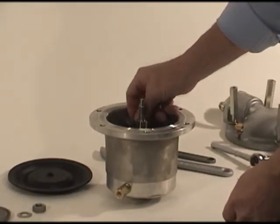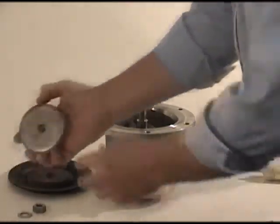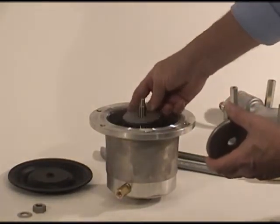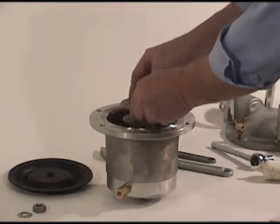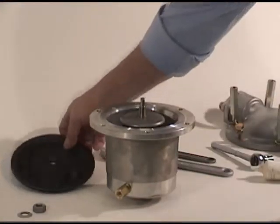Next we install the cushion, then the backing washer. Install the air side center disk with the radius facing the diaphragm.